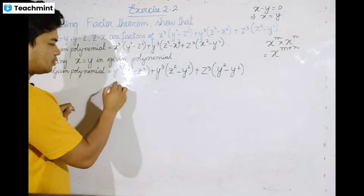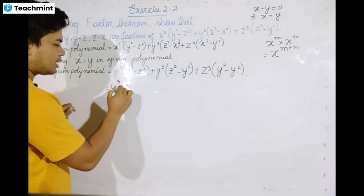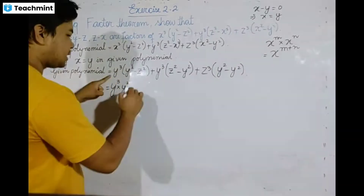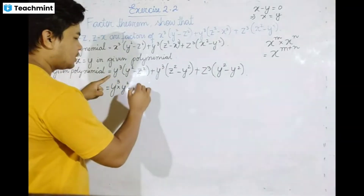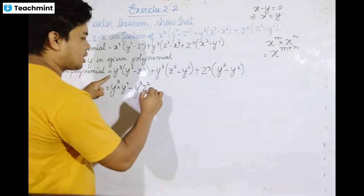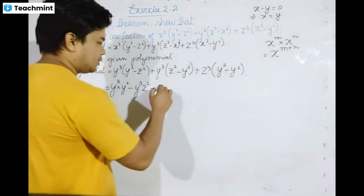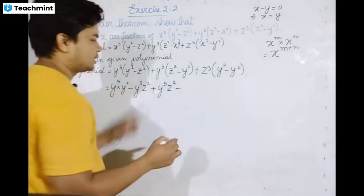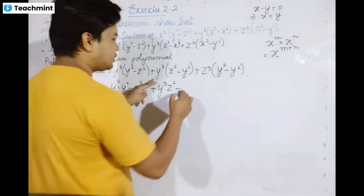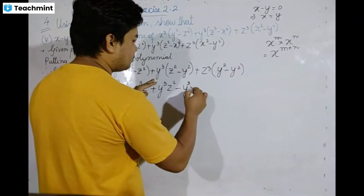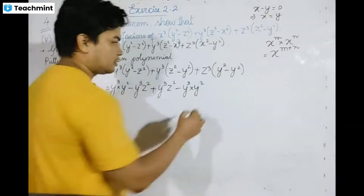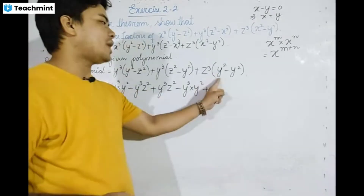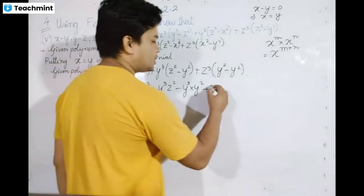So y cubed multiplied by y squared minus y cubed multiplied by z squared, plus y cubed multiplied by z squared minus y cubed multiplied by y squared. We see y squared minus y squared gives zero.